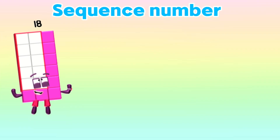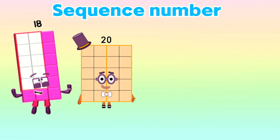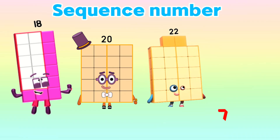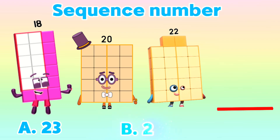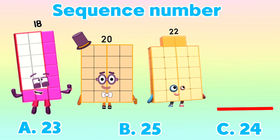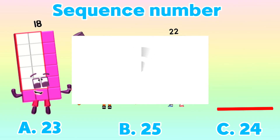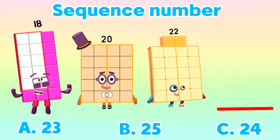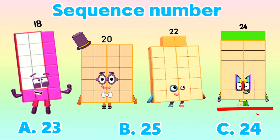Next. 18, 20, 22, blank. What is the correct answer? Is it letter A: 23? B: 25? Or is it letter C: 24? And the correct answer is letter C: 24.